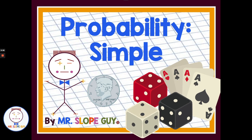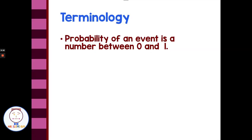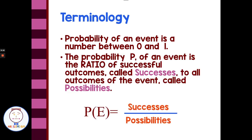In today's lesson, we're going to talk about simple probability. The probability of an event is a number between zero and one. The probability P of an event is the ratio of successful outcomes, called successes, to all outcomes of the event, called possibilities.